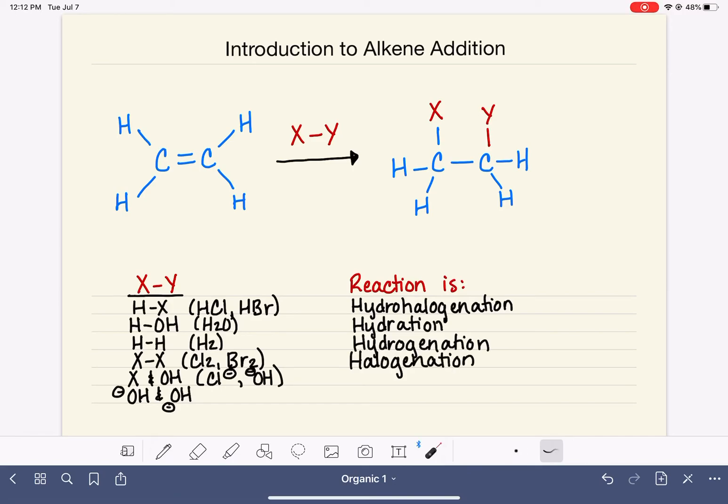When we add two OH groups, we call this dihydroxylation—di for two hydroxyl groups. And this one that I skipped, the reaction itself doesn't have a name. The product formed from this particular type of addition reaction is called a halohydrin, so we call this reaction, generically, the formation of a halohydrin.